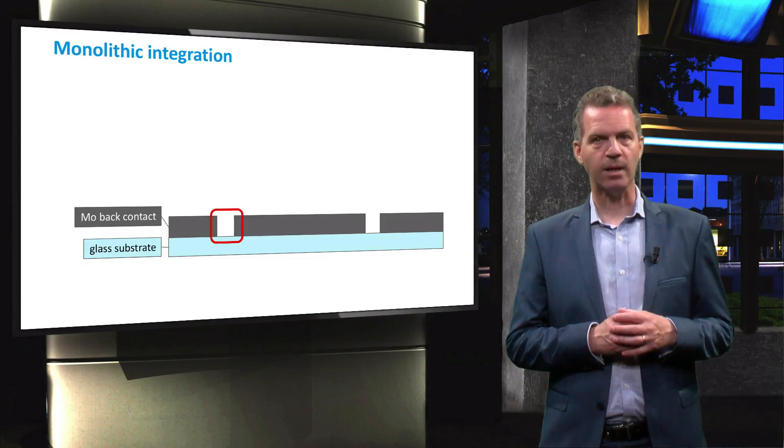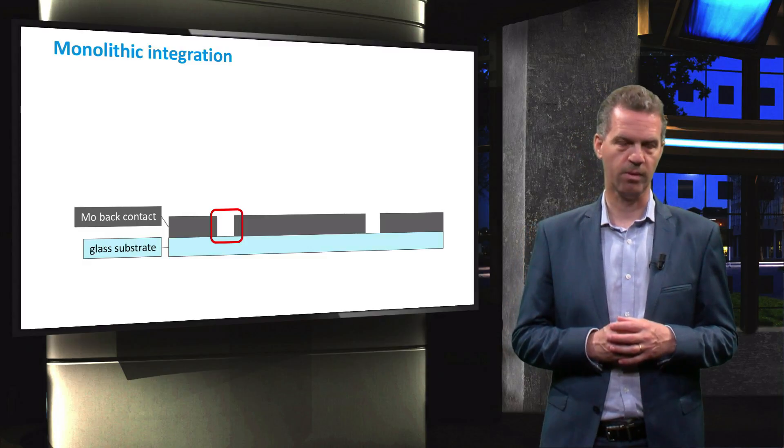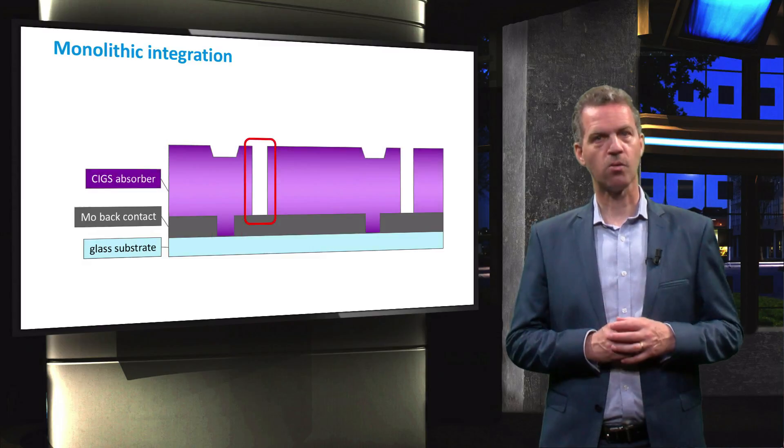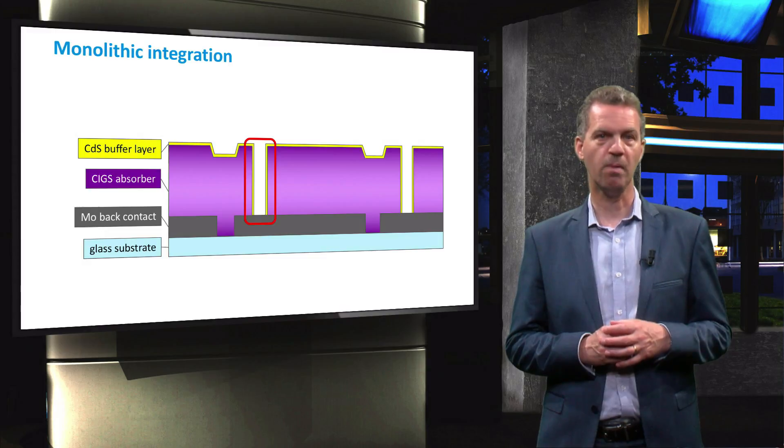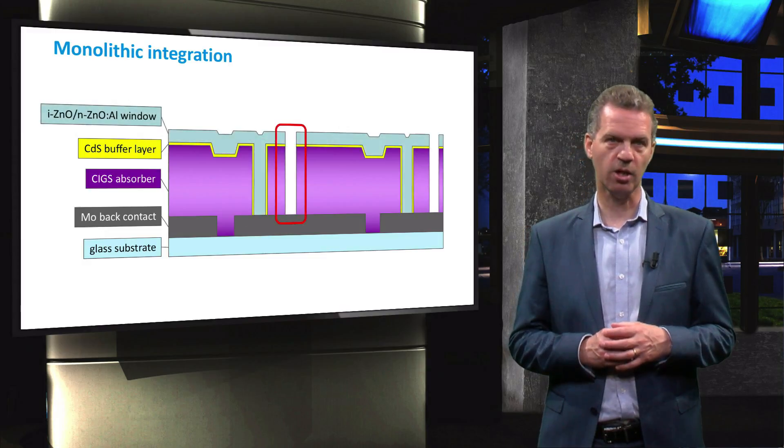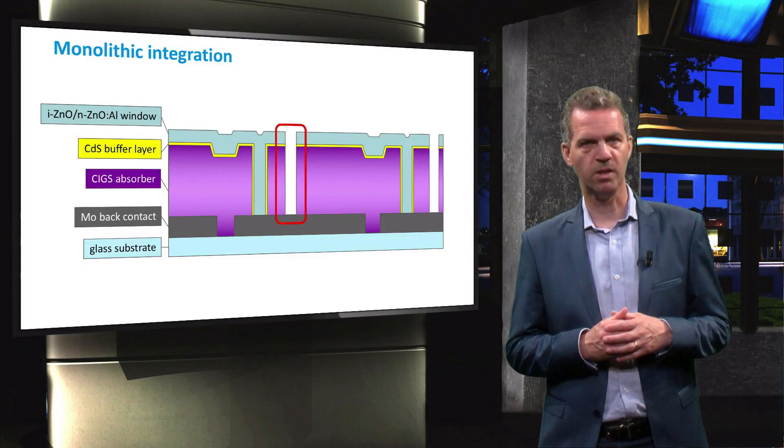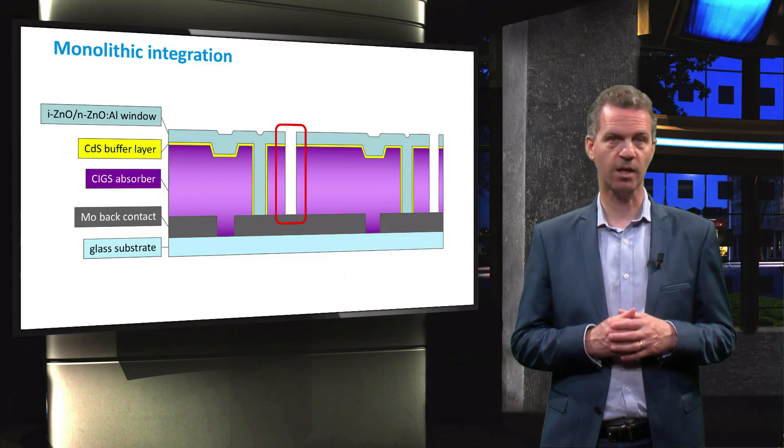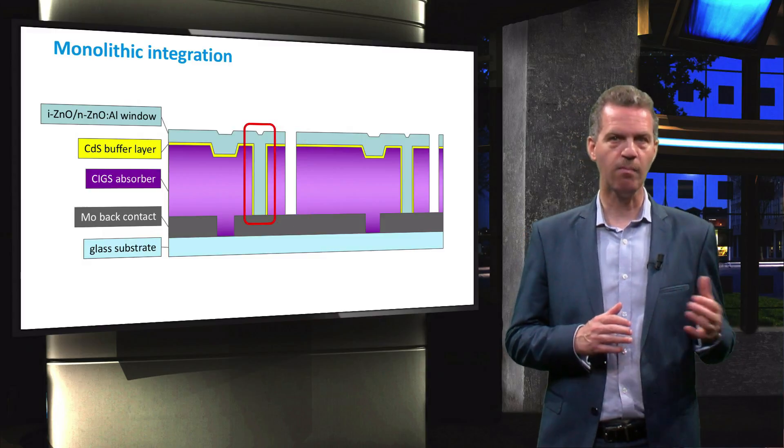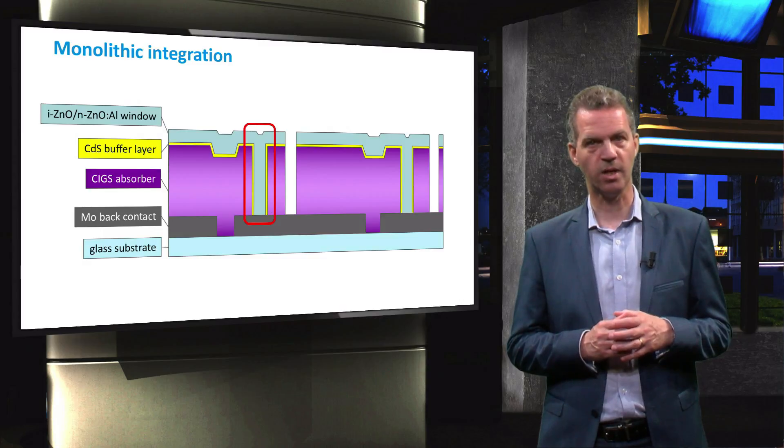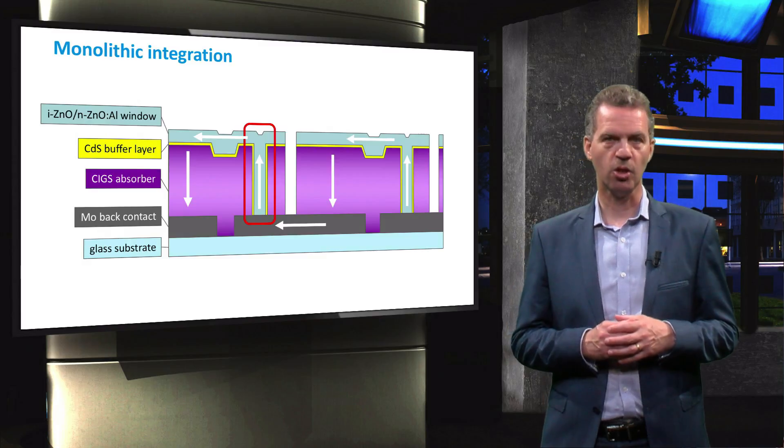The molybdenum back contact receives the first laser scribe prior to the CIGS deposition step. A second scribe is performed after CIGS deposition, followed by the cadmium sulfide buffer layer and the zinc oxide TCO layer. A third laser scribe divides the material into cells of the right size, while the connection between the front TCO layer of the first cell and the back contact of the second cell is located here. The current can then flow through the interconnection as is shown here.